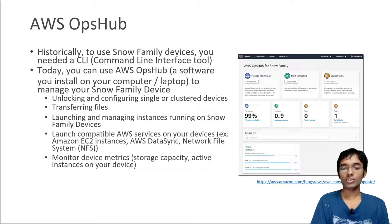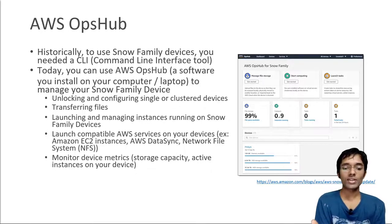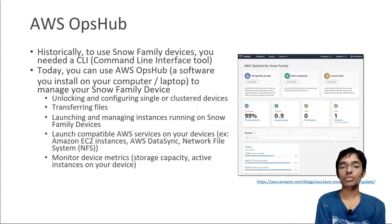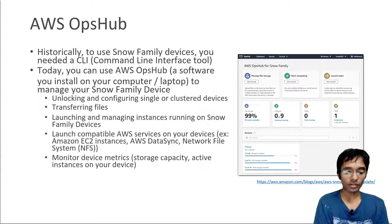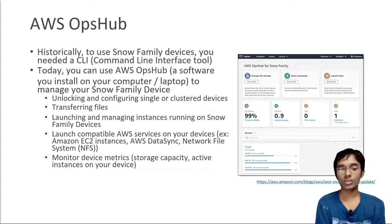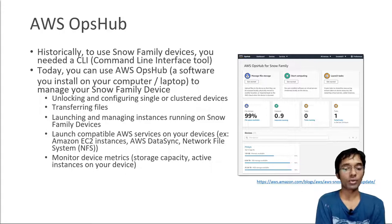AWS OpsHub is a software application you download on your computer or laptop — not a cloud service. Historically, managing Snow devices required a CLI, which was very difficult. OpsHub provides a graphical interface to connect to, configure, and use your Snow devices. It allows you to unlock and configure single or clustered devices, transfer files, launch and manage EC2 instances running on Snow devices, monitor device metrics, and use DataSync for network file transfer.